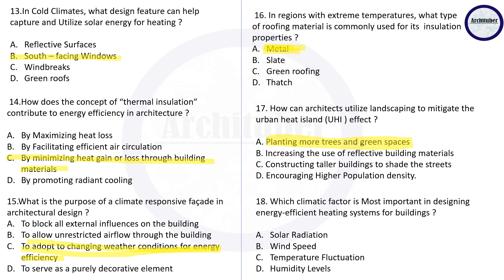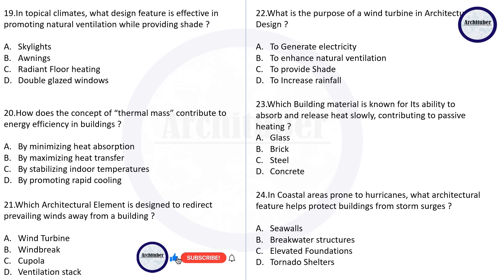Question eighteen: which climatic factor is most important in designing an energy-efficient heating system for buildings? The correct answer is solar radiation. Question nineteen: in tropical climates, what design feature is effective in promoting natural ventilation while providing shade? B is the correct answer. Question twenty: how does the concept of thermal mass contribute to energy efficiency in buildings? By stabilizing indoor temperatures.